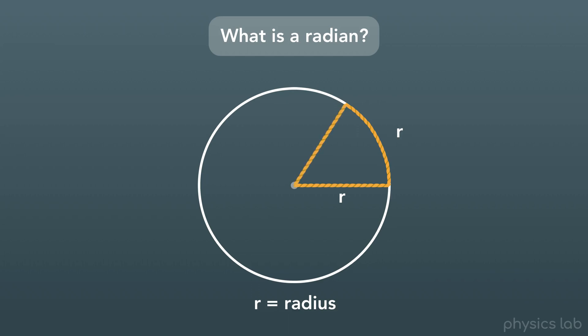Now if we draw a line from the center of the circle to where that ends, we form an angle inside the circle. The value of that angle right there is 1 radian. And for reference, that's about 57.3 degrees.